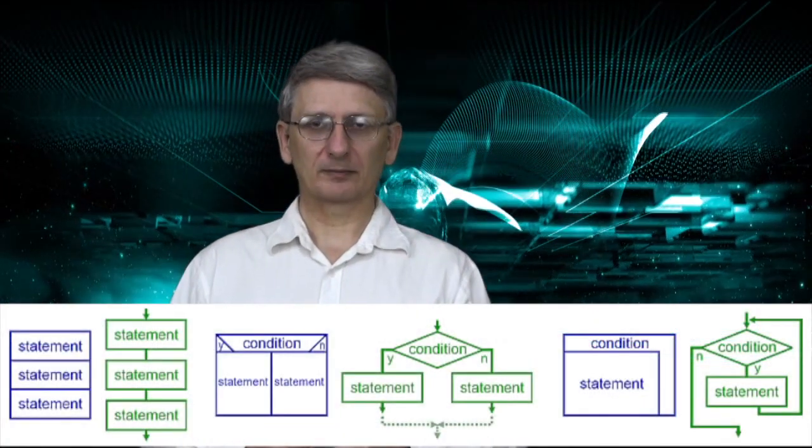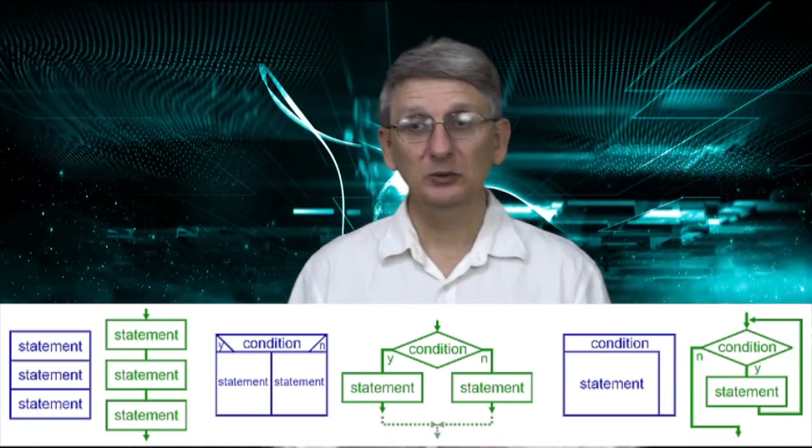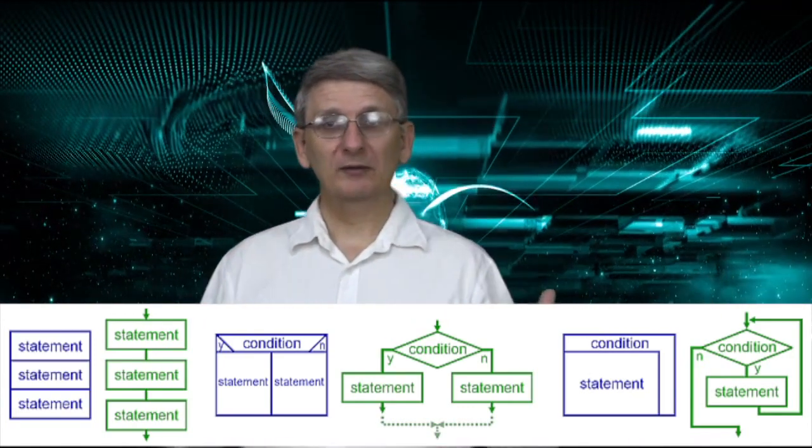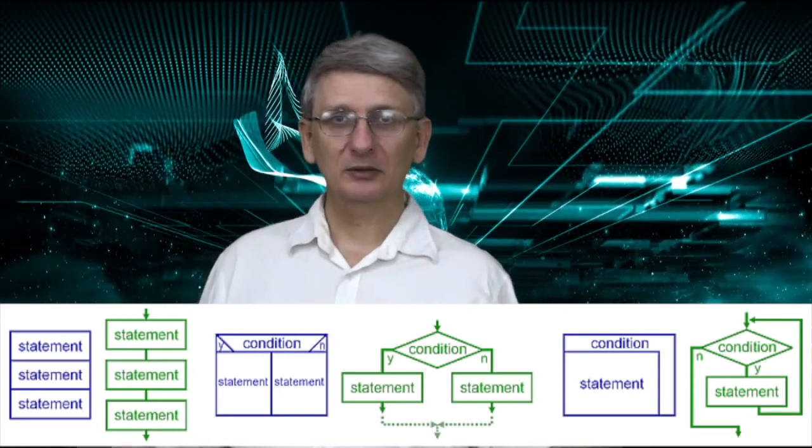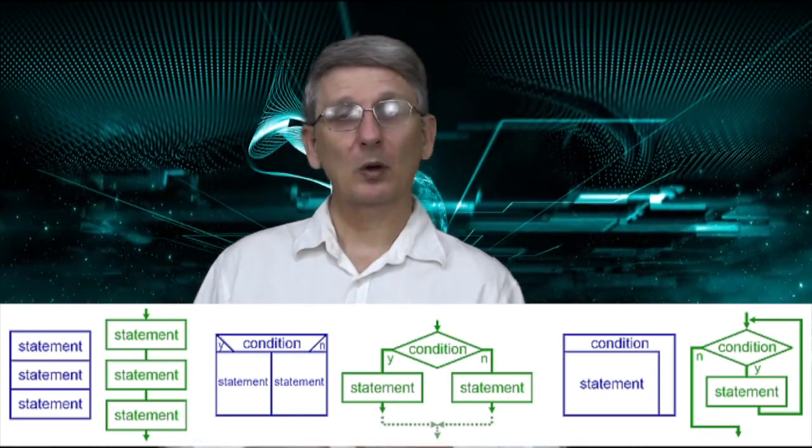Now structured computer programming involves just three types of activity and these are called control structures. We can represent these with diagrams, most commonly flowcharts, but also other forms such as Nassi-Shneiderman diagrams and various other more complex processes.